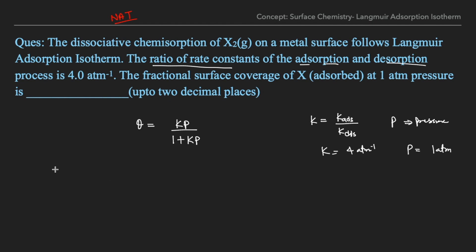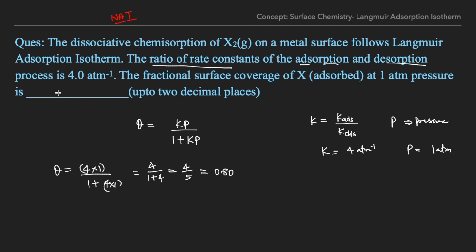What people will do is plug in directly: θ = (4 × 1) / (1 + 4 × 1) = 4/5 = 0.8. They will write down 0.8 and think they have done it correctly. But that is exactly where Gate tries to trick you — the answer is not 0.8, and that is not the correct way to solve this question.